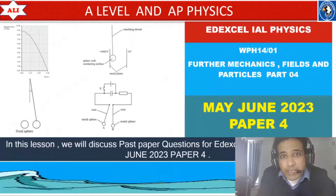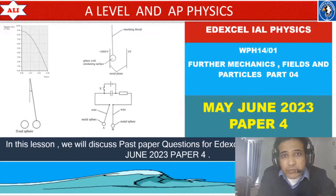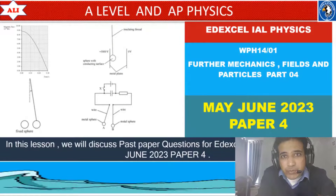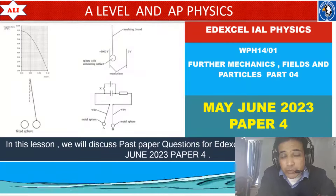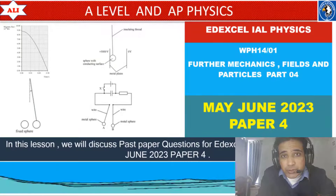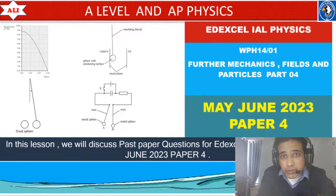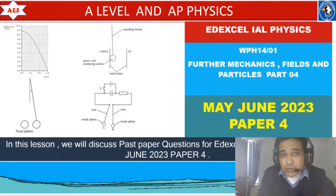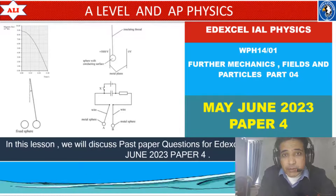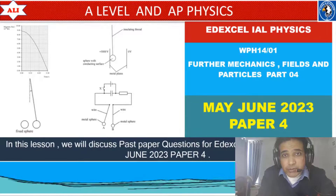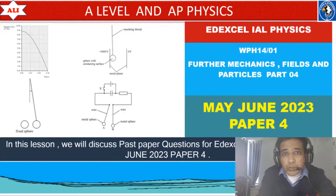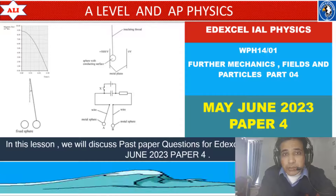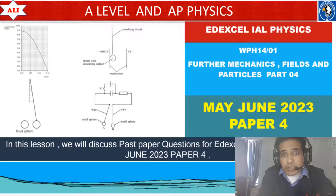Welcome to A-level and AP Physics. Today we discuss past paper questions from May/June 2023 Paper 4. We will start from question 16 and cover questions 16, 17, and 18. Let's study together, let's improve together.